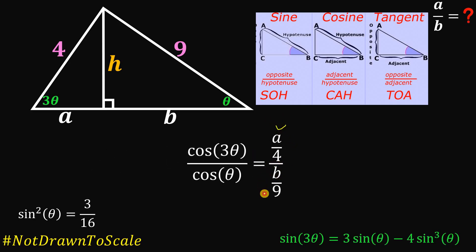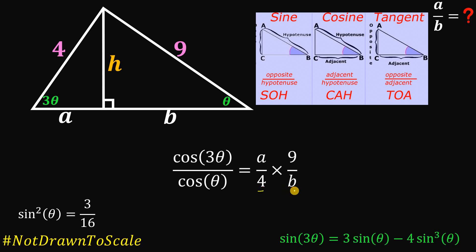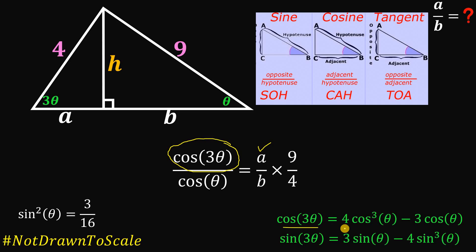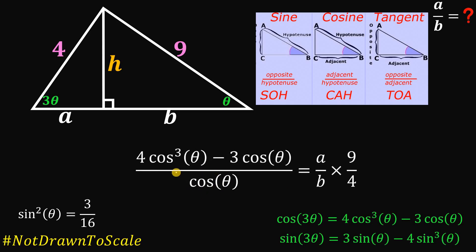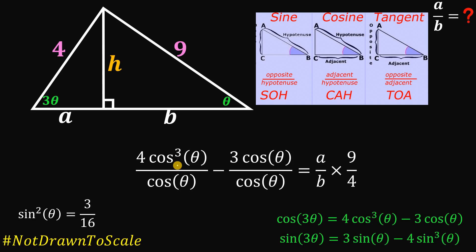On the right-hand side, we multiply A over 4 by the reciprocal of B over 9. Since multiplication is associative, we can rearrange to get A over B times 9 over 4, which equals cosine 3 theta over cosine theta. Using the triple angle identity, cosine 3 theta equals 4 cosine cubed theta minus 3 cosine theta. Splitting this fraction gives us 4 cosine squared theta minus 3.